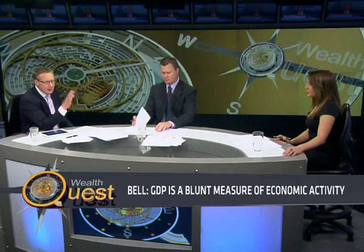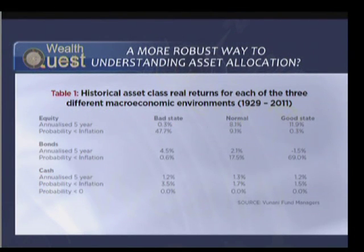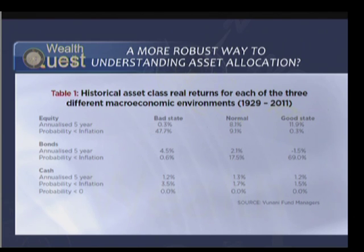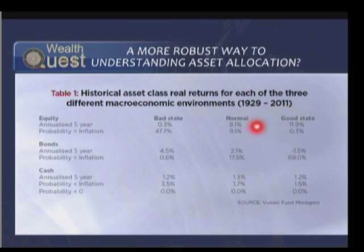We've got a table that summarizes some of the findings that Vinani utilizes from an asset allocation perspective. It shows equities at the top, then bonds, then cash, and shows you the bad state, normal state, and good state with the returns. Let's focus on equities. Look at the return on an annualized five-year basis in a bad state, relative to the probability for equities to do worse than inflation at 47.7%. In a normal state, you see a real return for equities of 8.1%. And in a good state, look at it — 11.9%, with a probability that equities will do worse than inflation of just 0.3%. The stats here are just uncanny — they absolutely speak to the whole story.